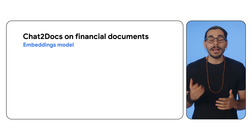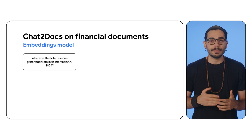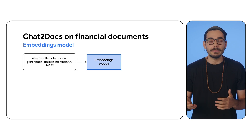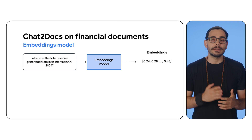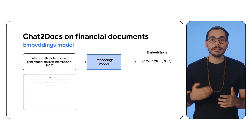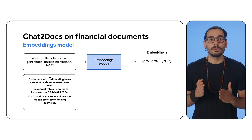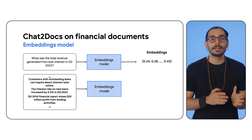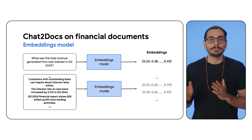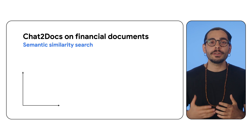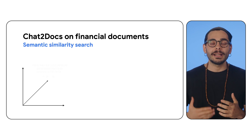This is where embeddings come in. Embeddings represent text as vectors, capturing semantic meaning so that relevant concepts get similar vectors. Within semantic similarity search, you compare the question embedding to the document embeddings to find the best matches. Here you have a representation of the semantic similarity search.